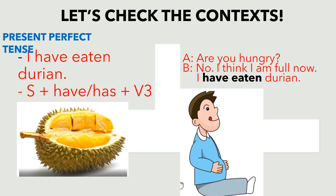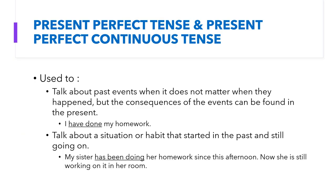The next context uses present perfect tense: 'I have eaten durian.' Example: 'Are you hungry?' 'No, I think I'm full now. I have eaten durian.' Present perfect tense can be used to talk about past events when it does not matter when they happened, but the consequences of those events can be found in the present.